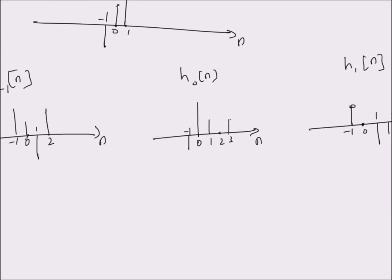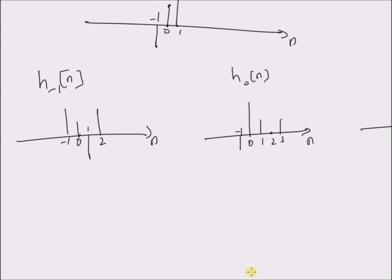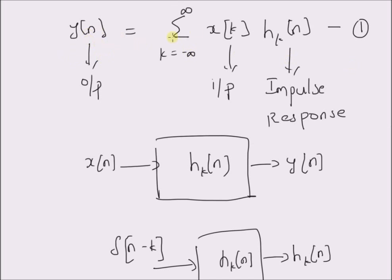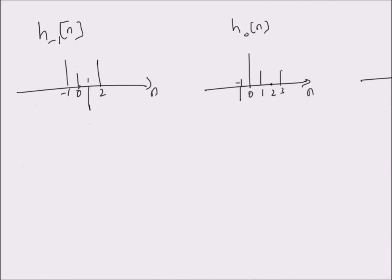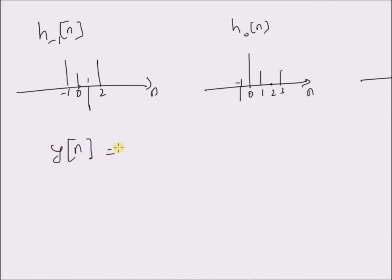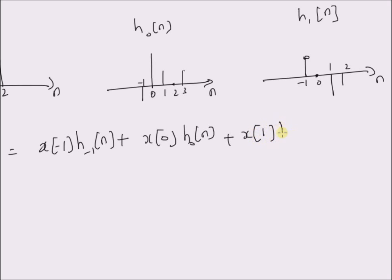Note that the value of the impulse response basically changes for different values of k. Since y(n) is defined by this sum, we note that x(n) has non-zero values only for three values of n. So y(n) can be rewritten as x(-1)·h_{-1}(n) plus x(0)·h_0(n) plus x(1)·h_1(n). Since we know the impulse response for each value of k — that is h_{-1}(n), h_0(n), and h_1(n) — we can construct these three sequences.